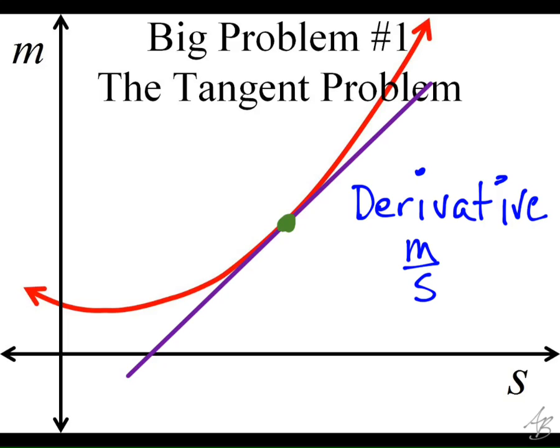The reason is we have a change in y on top, which is going to be a change in position or meters, and divided by a change in time on the bottom, which is going to be a change in seconds. So when we take a derivative, we get meters per second.